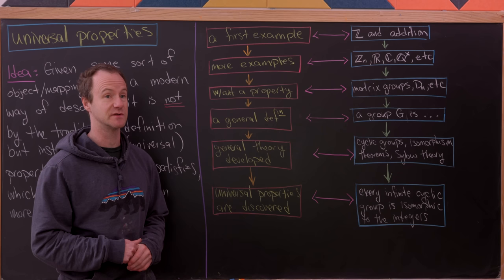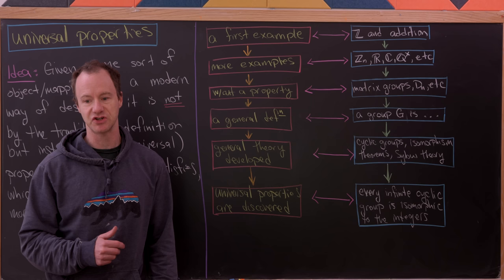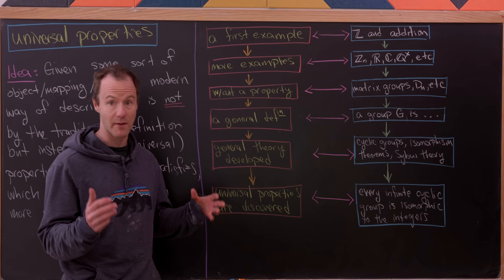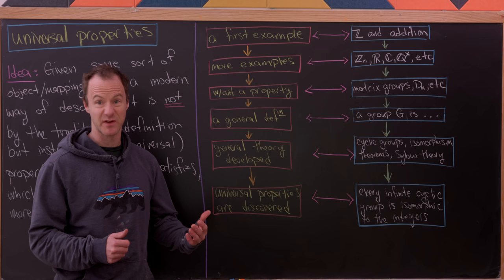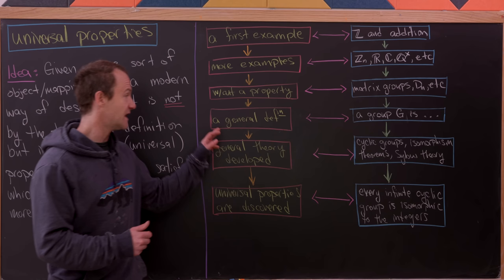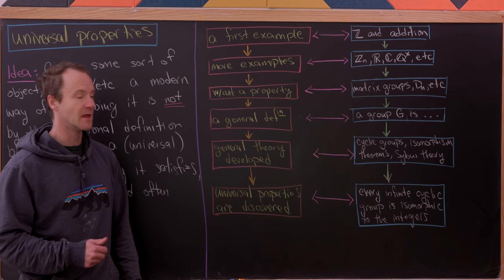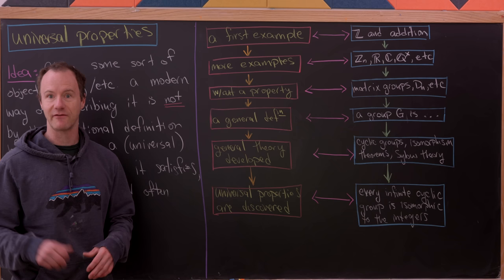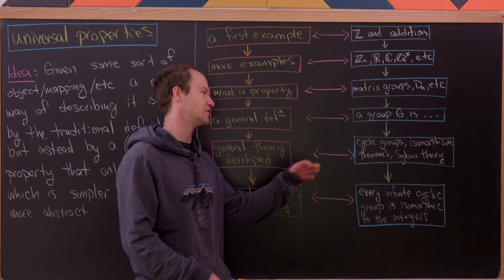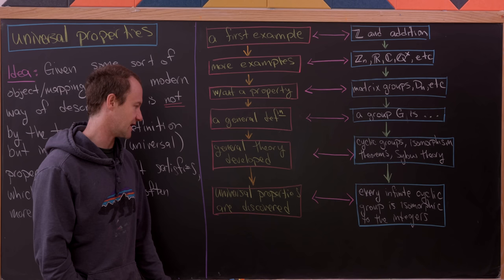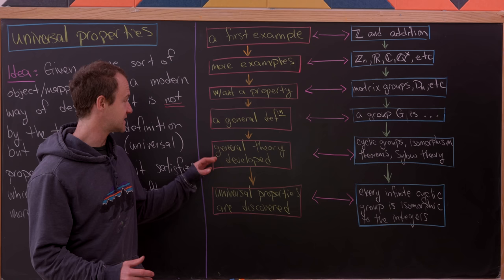From there you would write down a general definition. After studying lots of examples you'd see properties they all share, leading to a general definition. A group is a set together with an operation such that you have an identity, inverses, and associativity. Then you'd develop a general theory — cyclic groups, isomorphism theorems, normal subgroups, quotient groups, Sylow theory, and so on. After all of that, you might discover some universal properties, like the fact that every infinite cyclic group is isomorphic to the integers.